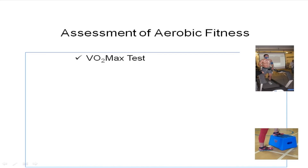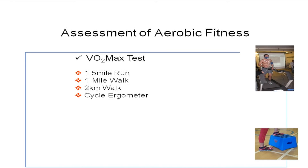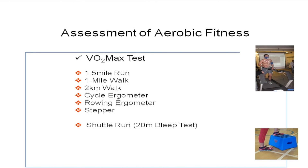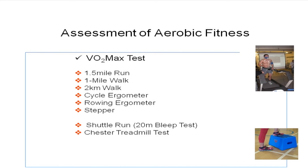For assessment of aerobic fitness, there are a variety of tests. The gold standard is generally considered the VO2 max test, conventionally done on a treadmill but also possible on other ergometers like a cycle ergometer. Outside the laboratory, options include a mile-and-a-half run, a one-mile walk, a two-kilometre walk, a cycle ergometer, a rowing ergometer, a stepper, and the 20-metre shuttle run bleep test — all usable in community scenarios. There's also the Chester Treadmill Test and, of course, the Chester Step Test.